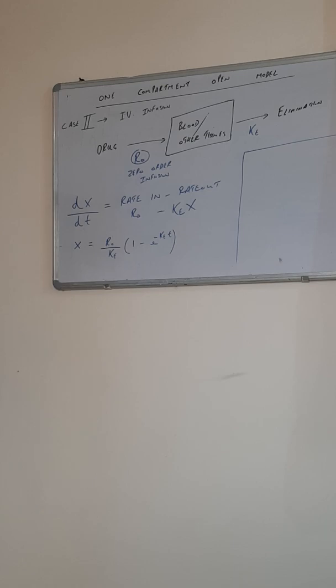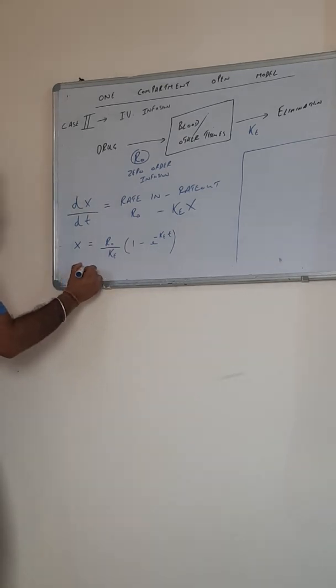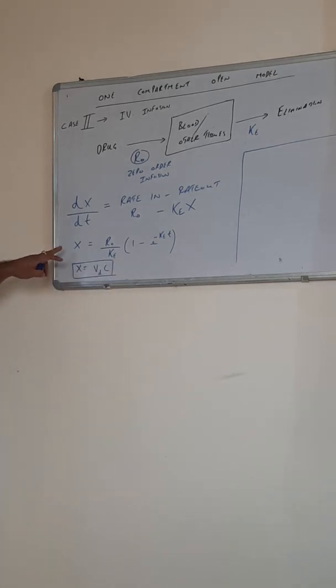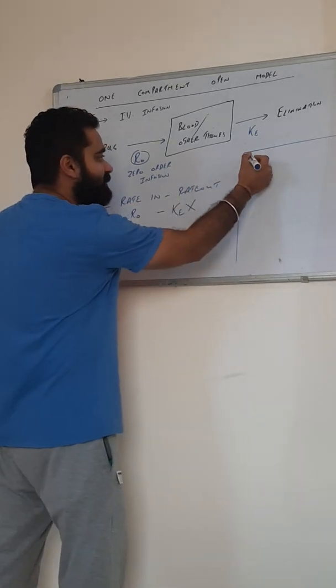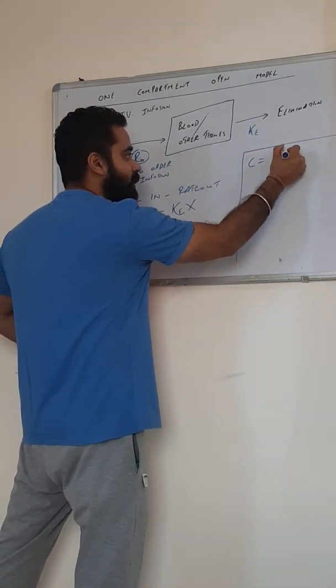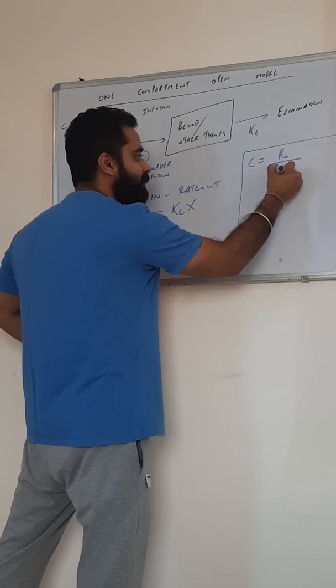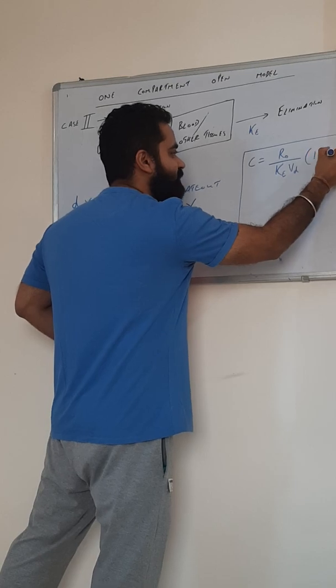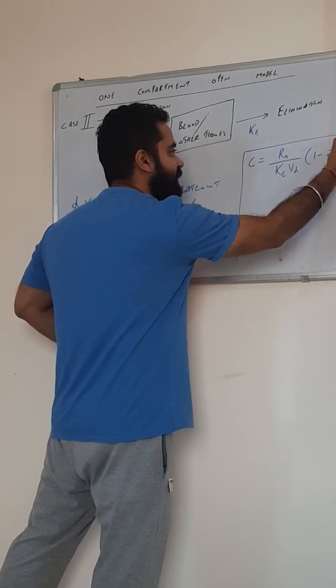As we know that X is equal to VDC. What we are doing, we are trying to convert X into concentration terms. So, X is equal to R0 upon KEVD, 1 minus e to the power minus KET.